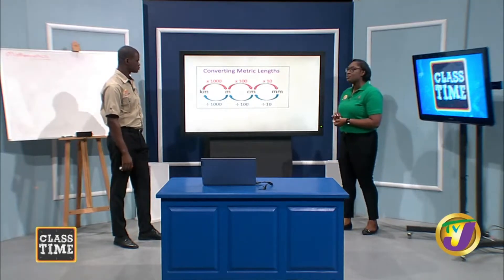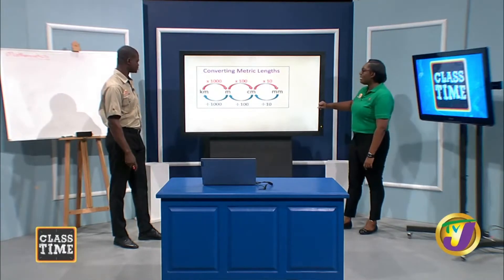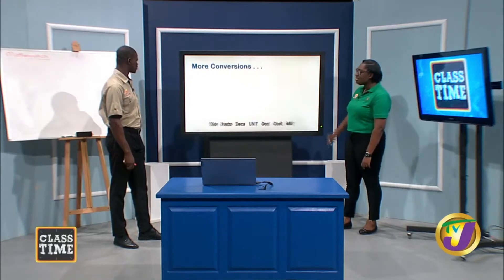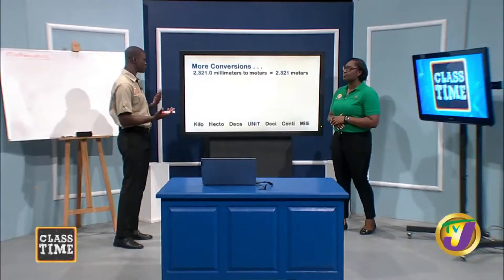For example: convert 2,321 millimeters to meters. Identify your starting unit — millimeters — and where you want to go — meters. Count the units in between: there are 3 units, so we divide by 1,000. That gives us 2.321 meters. When multiplying or dividing by powers of 10, the digits move accordingly — some say the decimal point moves, but it's actually the numbers moving.